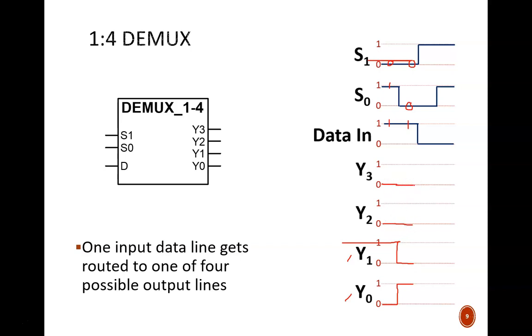From this point on, the data in is low, so all of the outputs end up being low. Even though Y2 is selected in the next time slot, the data fed into it is at zero, so it doesn't look like anything changes on that waveform.